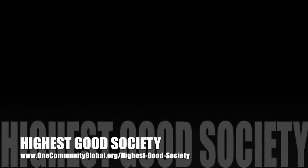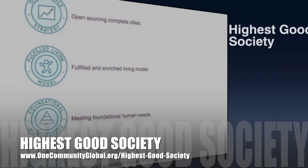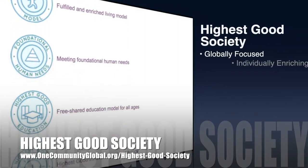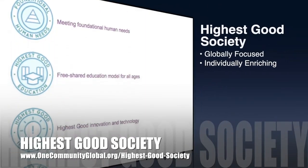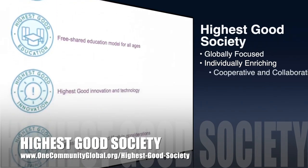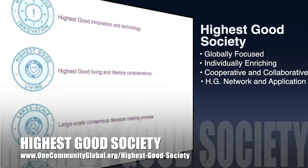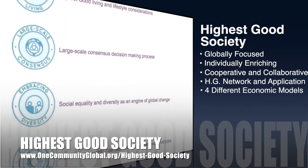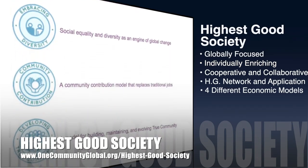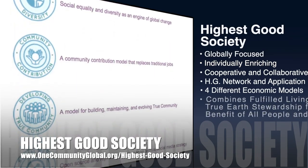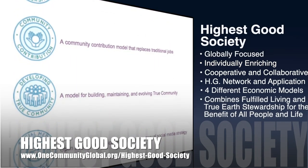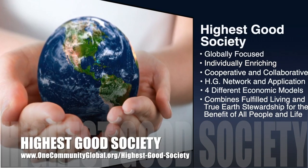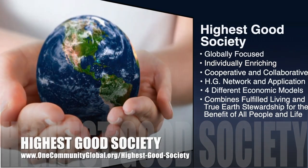The One Community approach to highest good society is globally focused, individually enriching, cooperative and collaborative. It includes a highest good network and application, four different economic models, and combines fulfilled living and true earth stewardship for the benefit of all people and all life on this planet.